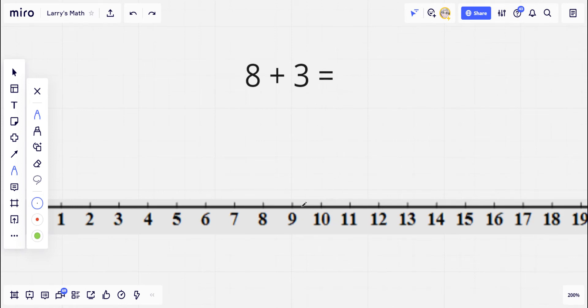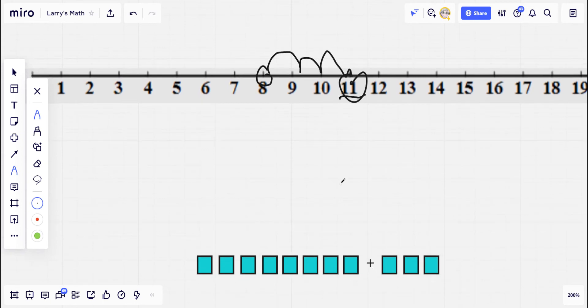One way to think about this is on the number line. To think about this problem on the number line, you'd start at 8, and then you'd move 1, 2, 3, and you'd end up at 11. So that's 8 plus 3 more, and you get to 11. I usually don't have a number line handy, so sometimes that's not the best method for me.